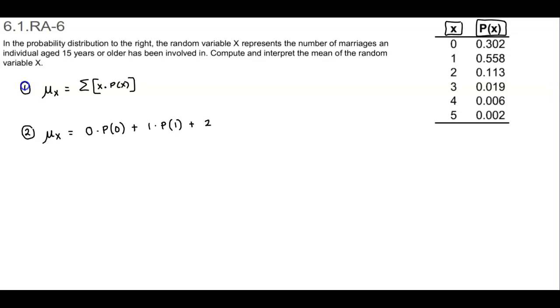Plus, we take 2 and multiply that by the probability of 2. Plus 3 times the probability of 3. Plus 4 times the probability of 4. And then plus 5 times the probability of 5.